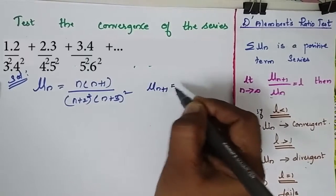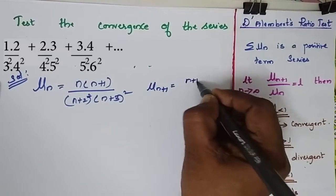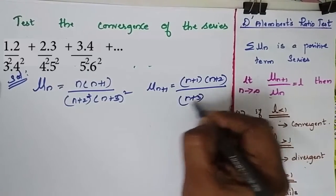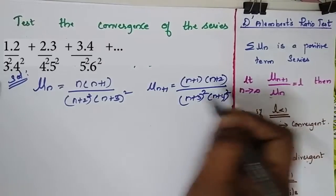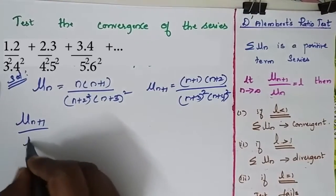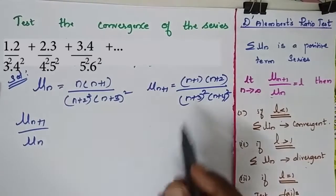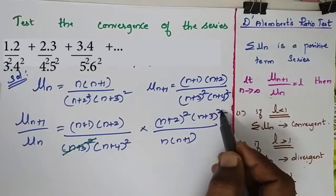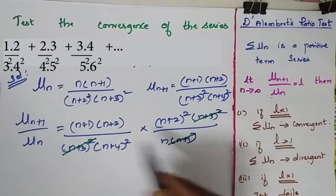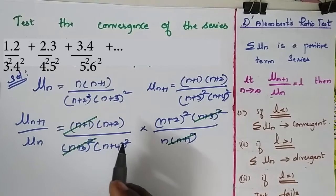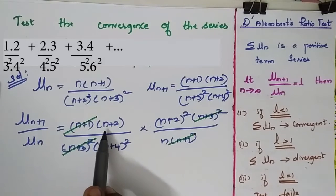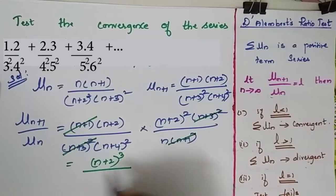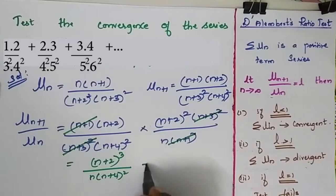So now my u(n+1) is equal to (n+1)(n+2) divided by (n+3)² times (n+4)². So I have to find u(n+1) by u(n). When I divide this by this, (n+3)² and (n+3)² will get cancelled, and (n+1) will get cancelled. So now I will be getting (n+2)³ divided by n(n+4)².